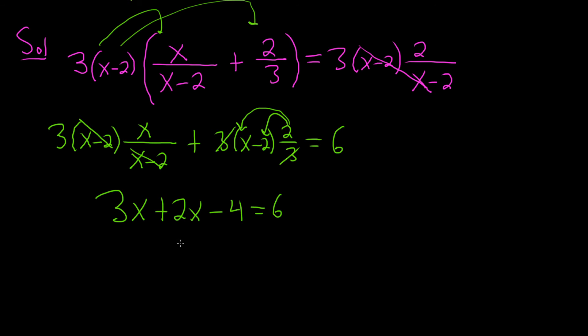3x plus 2x is going to give us 5x. So we have 5x minus 4, and that's equal to 6.